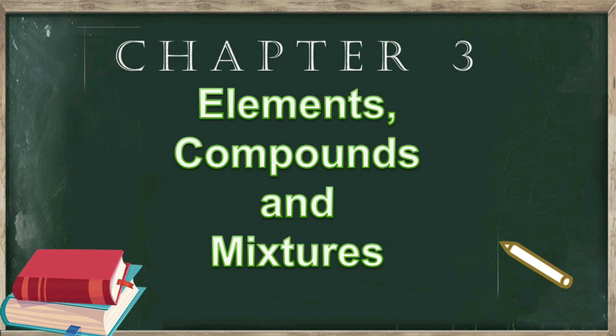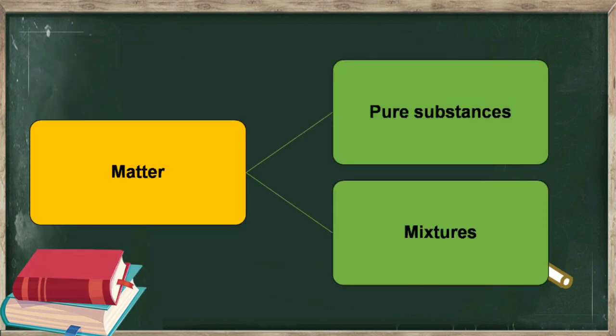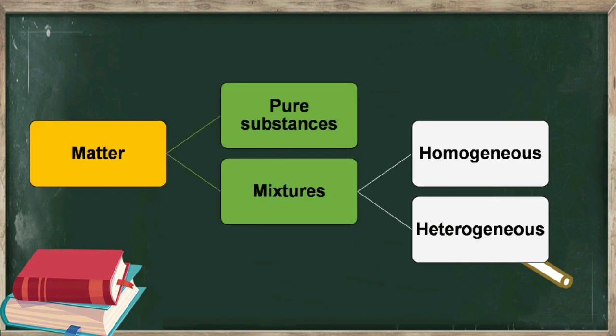Most of the things present around us occupy space and have mass. These things are called matter. Matter around us exists in two forms: pure substances and mixtures. Pure substances are classified into two types, elements and compounds. Mixtures are also classified into two types, homogeneous and heterogeneous mixtures.